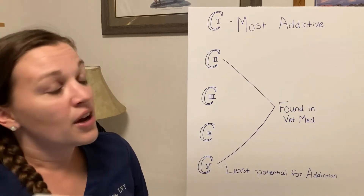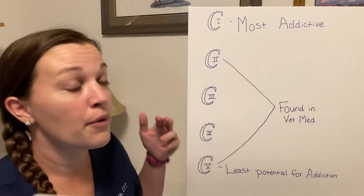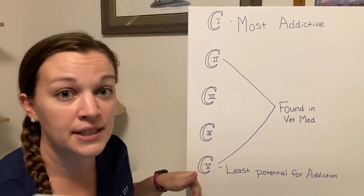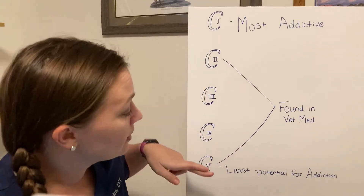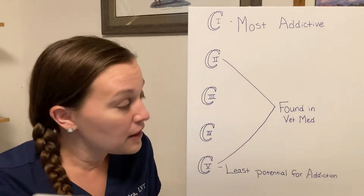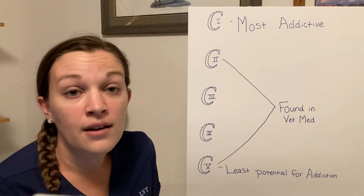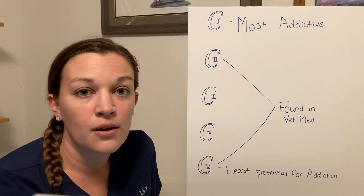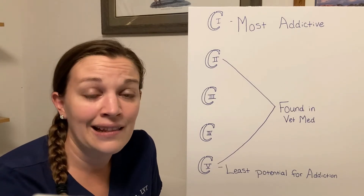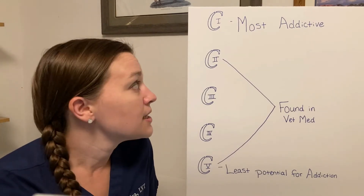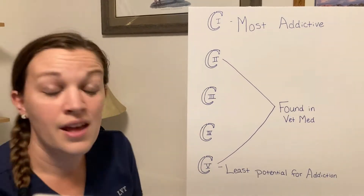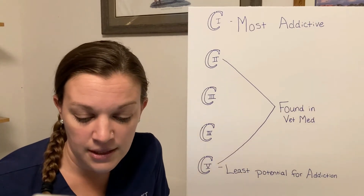They're set up on what's called a schedule — a scale from the most addictive potential to the least. It goes from one to five, with five being the least addictive. The things that are C1 are actually illicit or illegal drugs, so you wouldn't see them in medicine — things like heroin, LSD, cocaine. So we'll see C2, C3, C4, and C5 used within our practice.